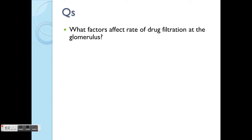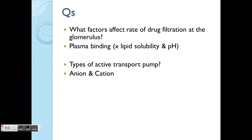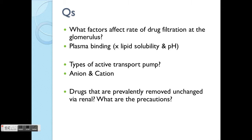These are text examples and explanations about the diagrams — please read through them. In the Q&A method: the factor that affects the rate of drug filtration is plasma binding — it's nothing to do with lipid solubility or the pH of the drug. There are several types of active transport system; in general they're divided into anion and cation, though there are more specific examples.